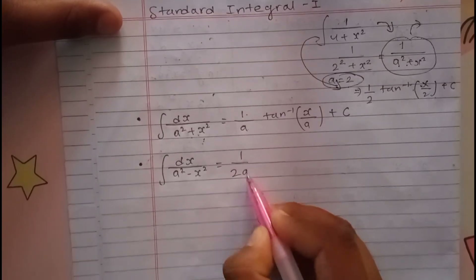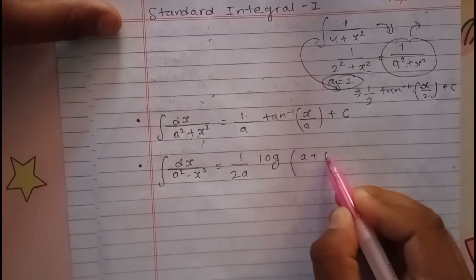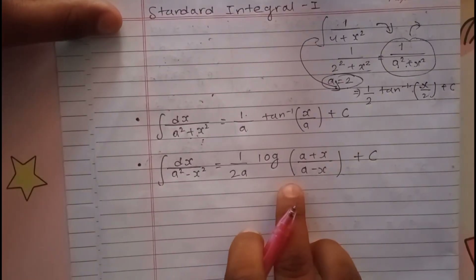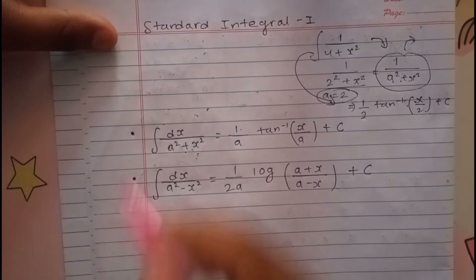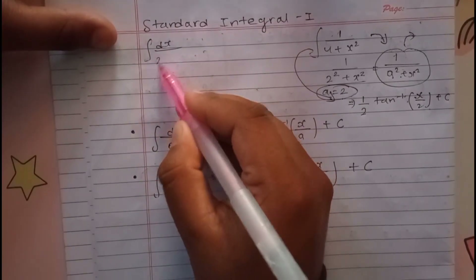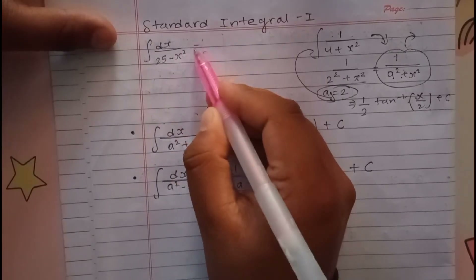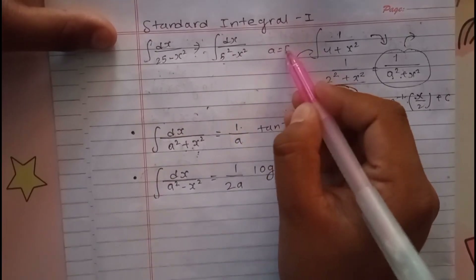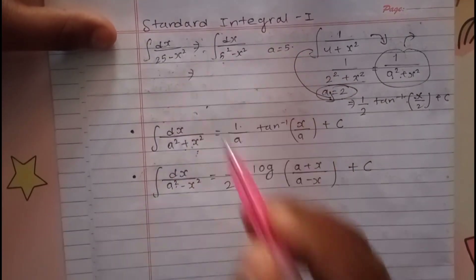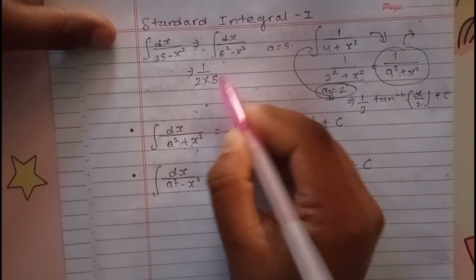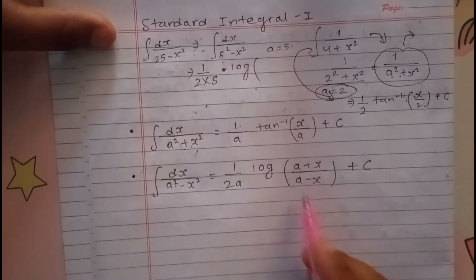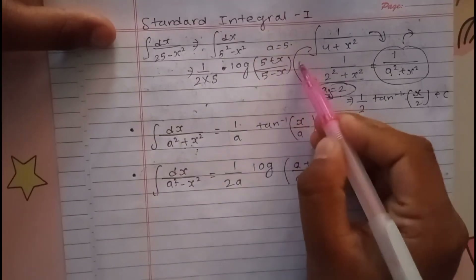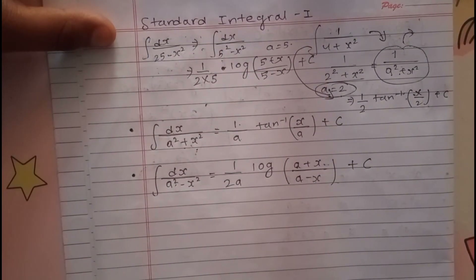The next standard integral: dx upon a² minus x². The formula for this is 1 by 2a, log of (a plus x) upon (a minus x), plus c. For example, if we have dx upon 25 minus x², we can write it as dx upon 5² minus x². Here a equals 5. So we can directly apply the formula: 1 by 2a, with a being 5, log of (5 plus x) upon (5 minus x), plus c. Easily done!